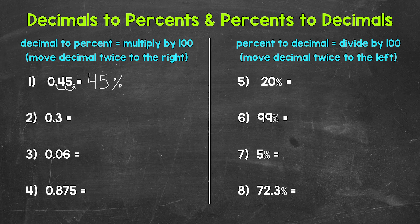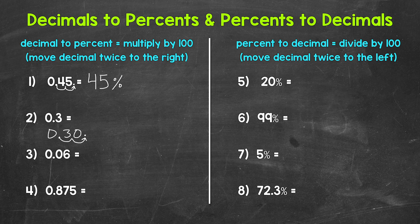Let's move on to number two, where we have 0.3 — three tenths. Let's multiply by 100 to convert this to a percent by moving the decimal twice to the right. I'll rewrite it underneath to give a little more room. Move it once, then twice to the right. We need to fill that place with a zero, so three tenths equals 30%.